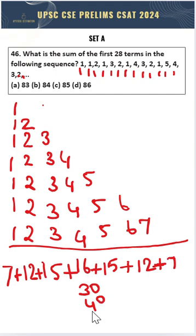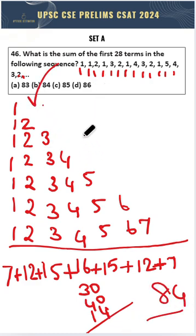and 7 plus 7 is 14, which means the answer will be 84. Therefore, option B is the right answer.